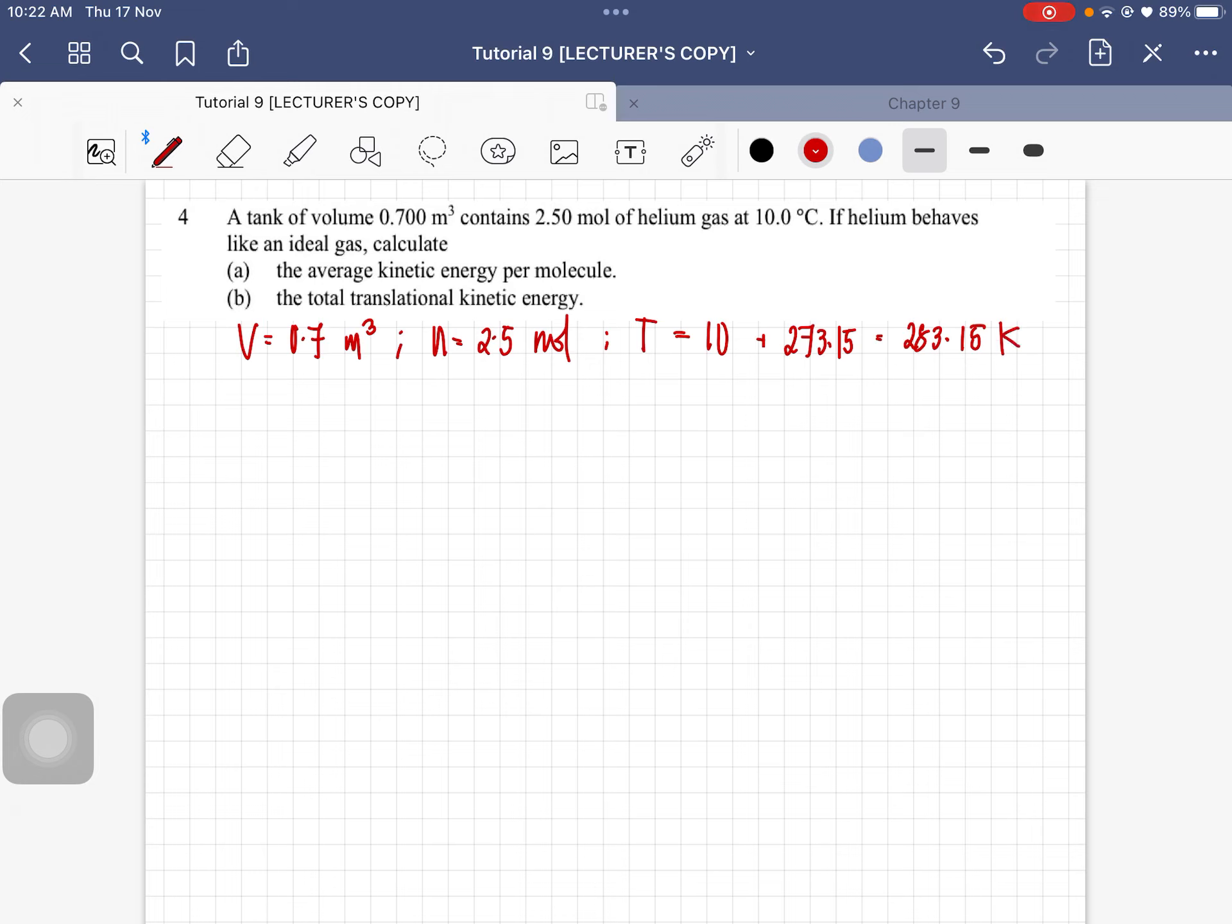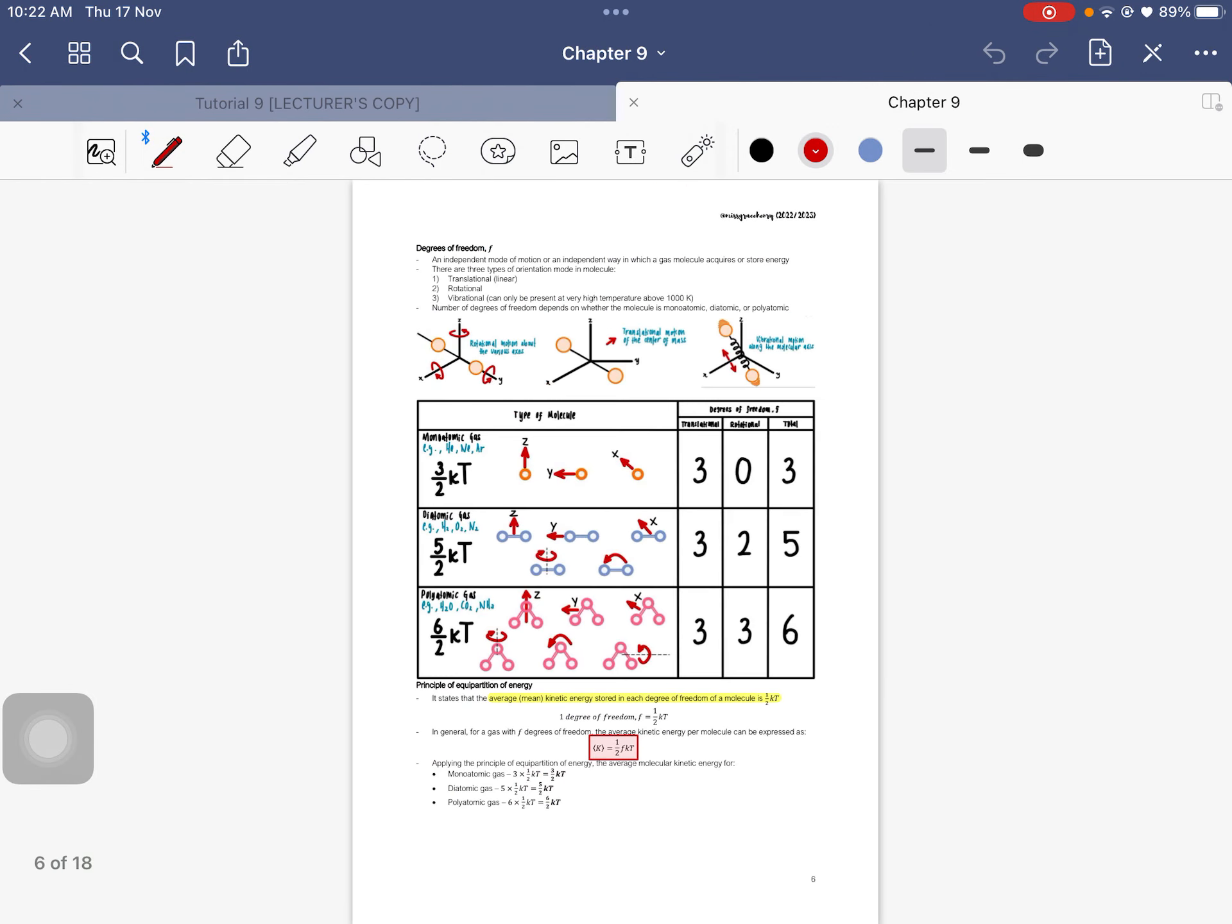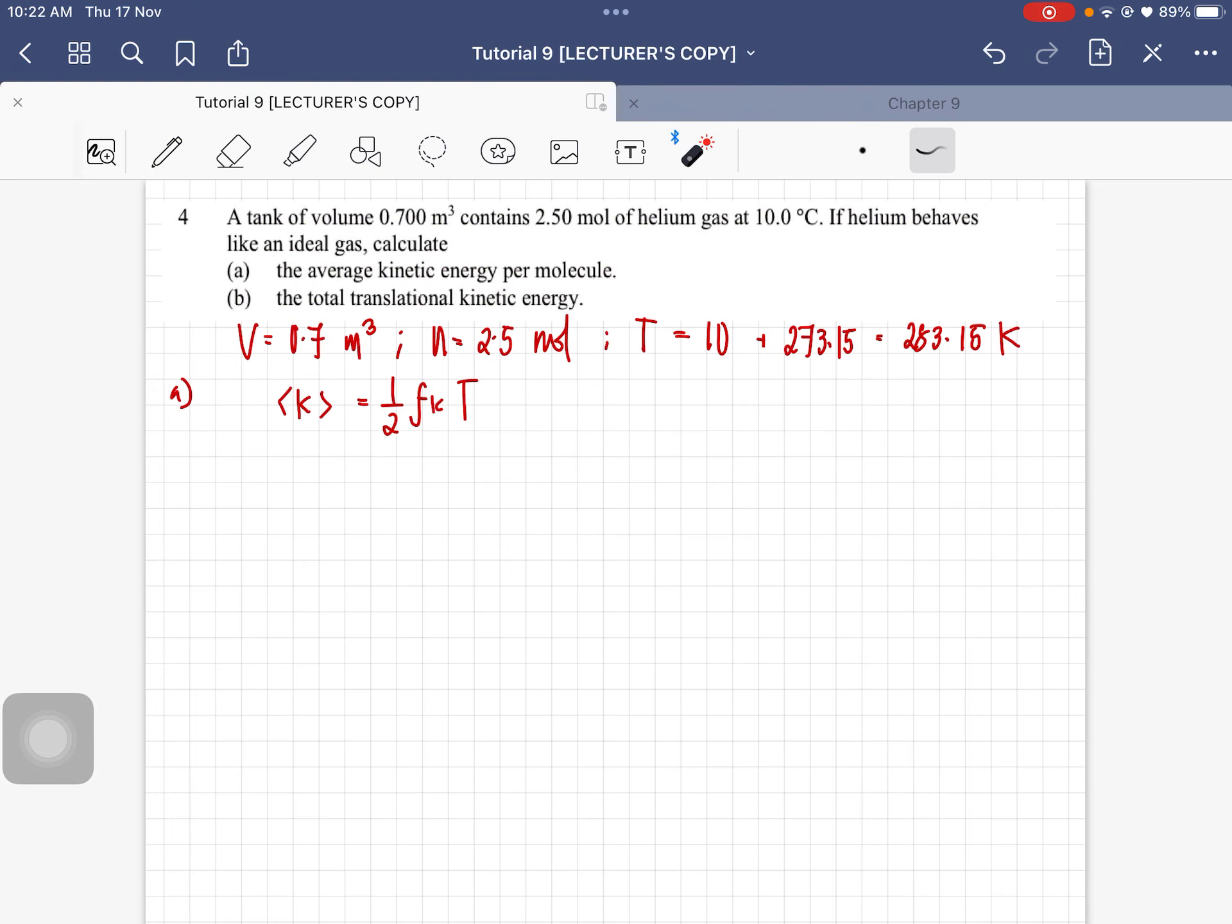And we know that the average kinetic energy per molecule is equal to half FKT. So this one is here lah. This formula is given here, and you just have to substitute lah. Helium gas is a monoatomic gas, so F is equal to 3.